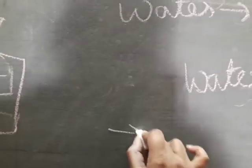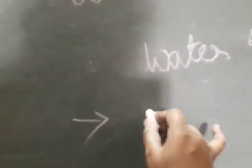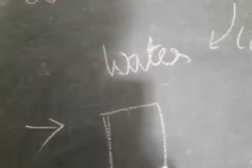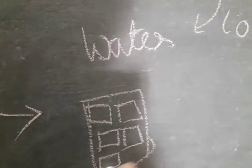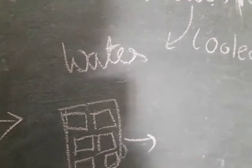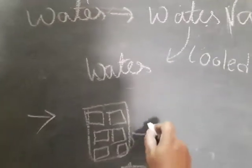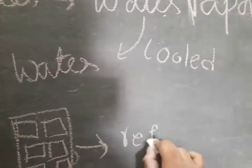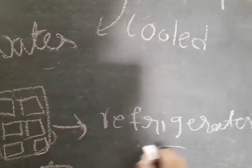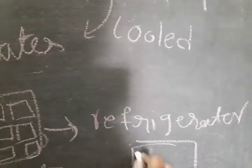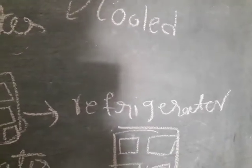What if water is cooled? See, children — fill up an ice tray with water, like this, and keep it inside the refrigerator. After some time, you will see the water has changed to ice cubes.